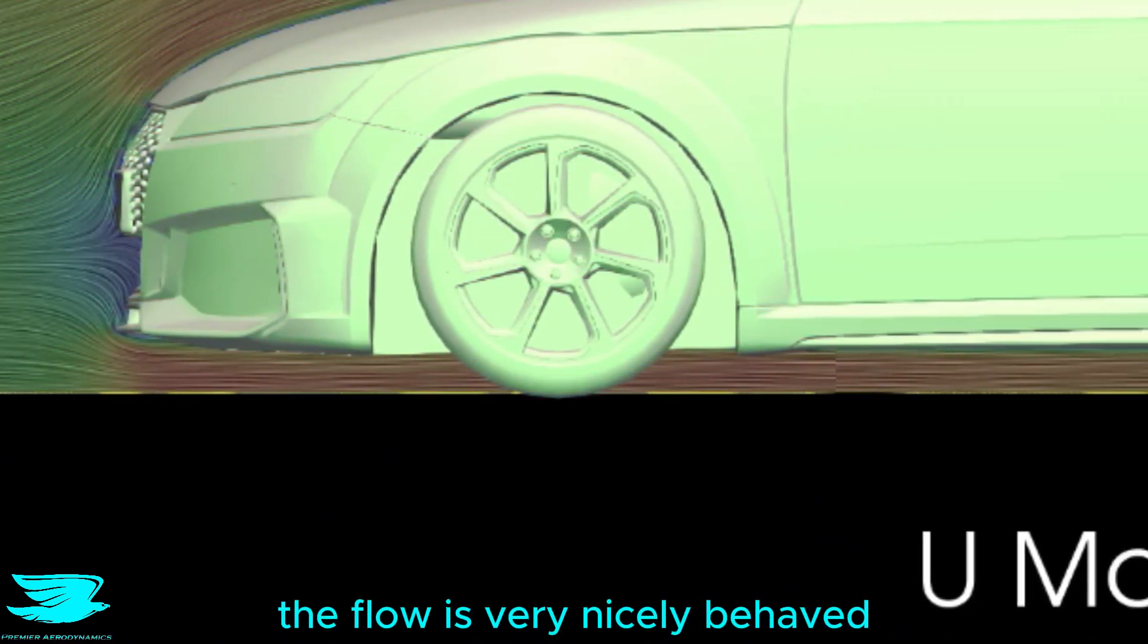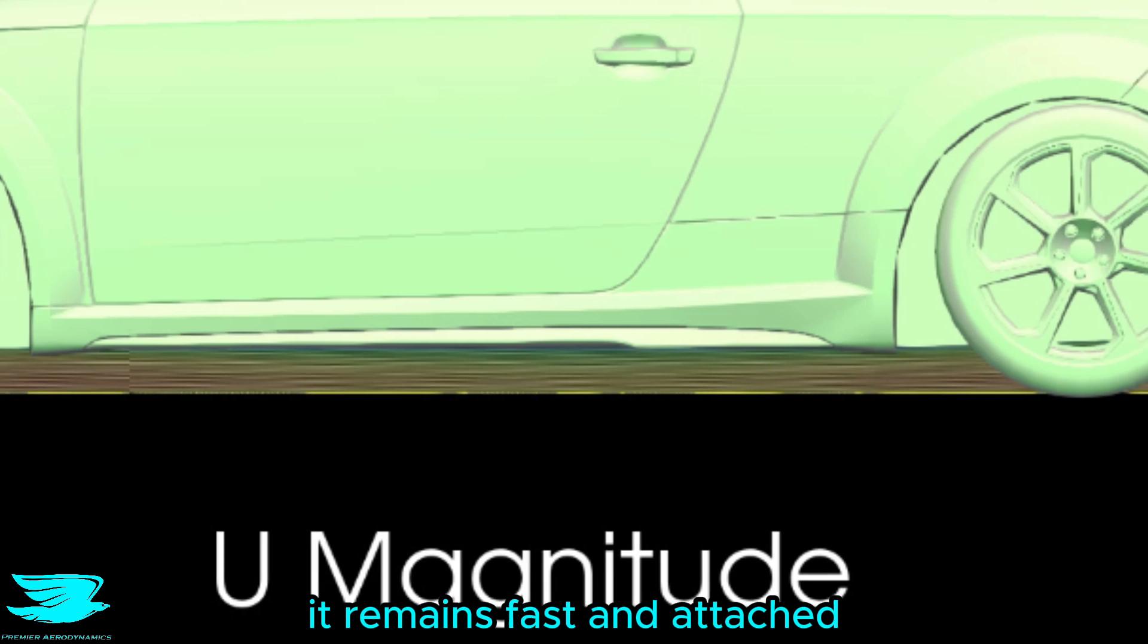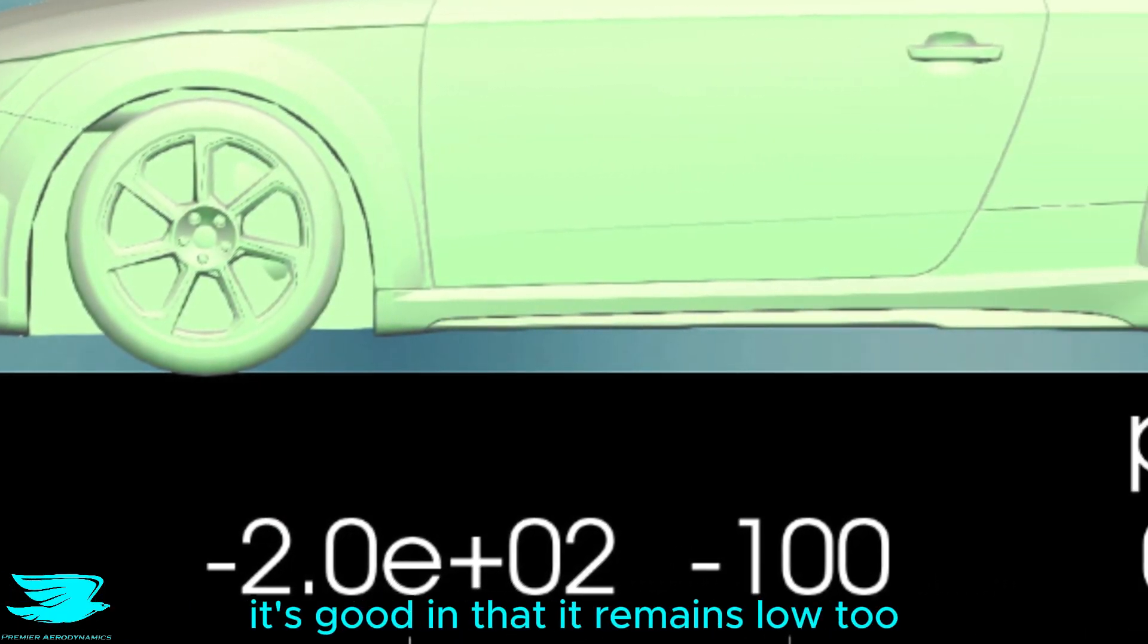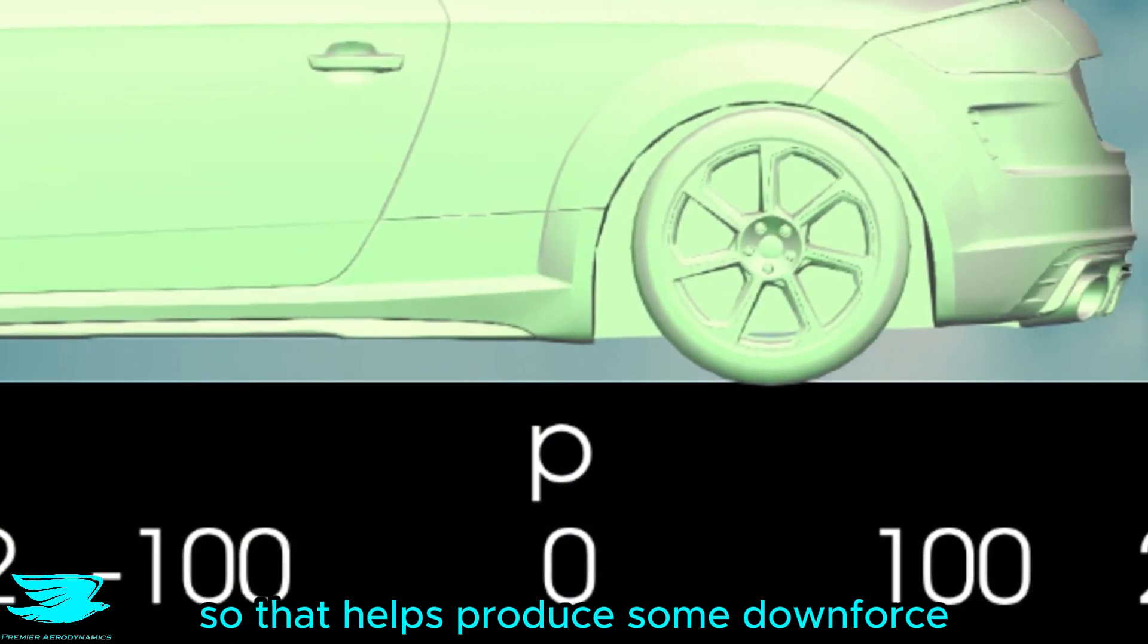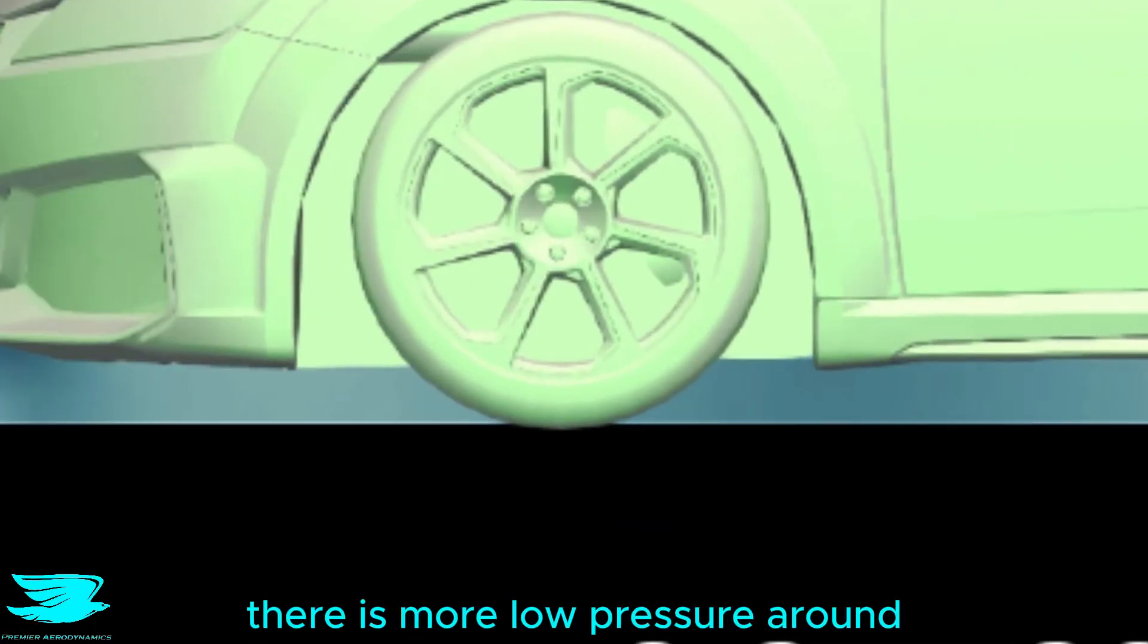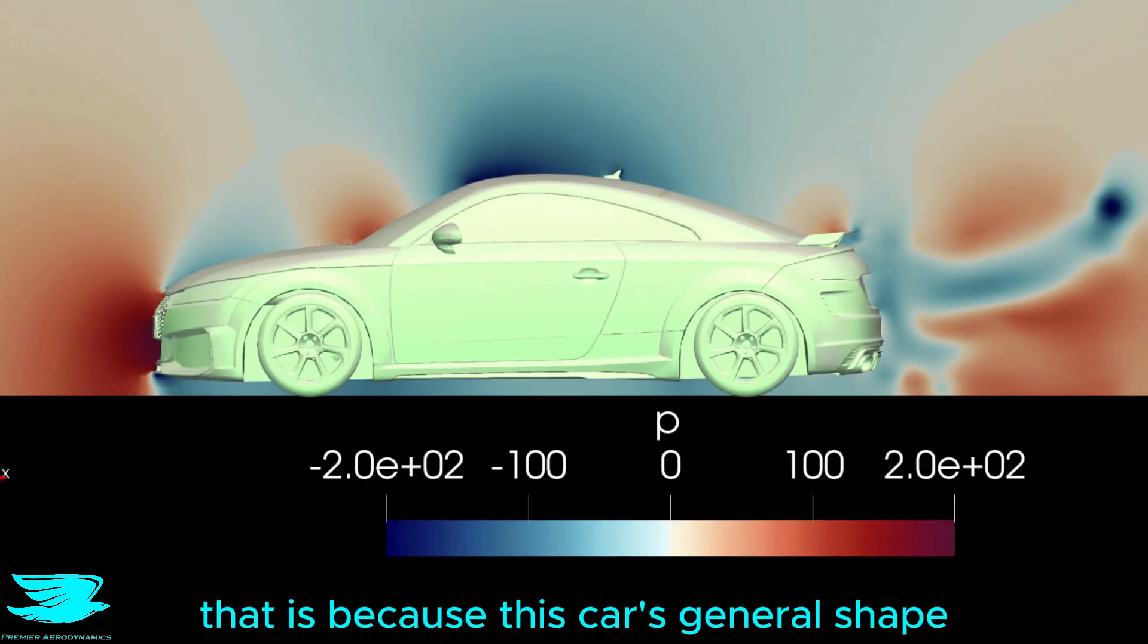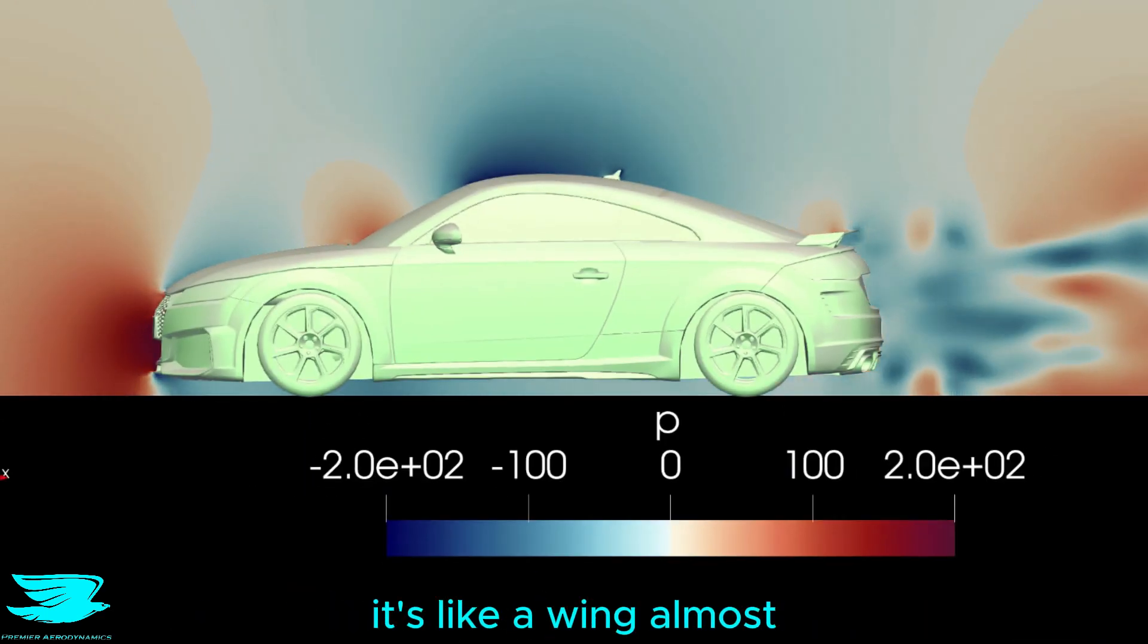For the rest of the underbody, the flow is very nicely behaved, it remains fast and attached. Looking at the pressure here, it's good in that it remains low too, so that helps produce some downforce. But cleverly, there is more low pressure around the front wheels. That isn't by accident, because the TT historically had a problem with stability at high speeds. That is because this car's general shape naturally produces lift. It's like a wing almost.